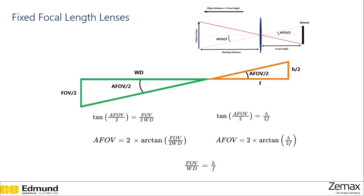We could also use rules about similar triangles — the proportions of the like parts of the triangles are the same — to say that the field of view over the working distance is the same as the height of the sensor over the focal length. Note that if we know any two of these parameters, we are able to determine the third one. This is very common for fundamental parameters of optical systems, where if you know two, they are going to set a third one.